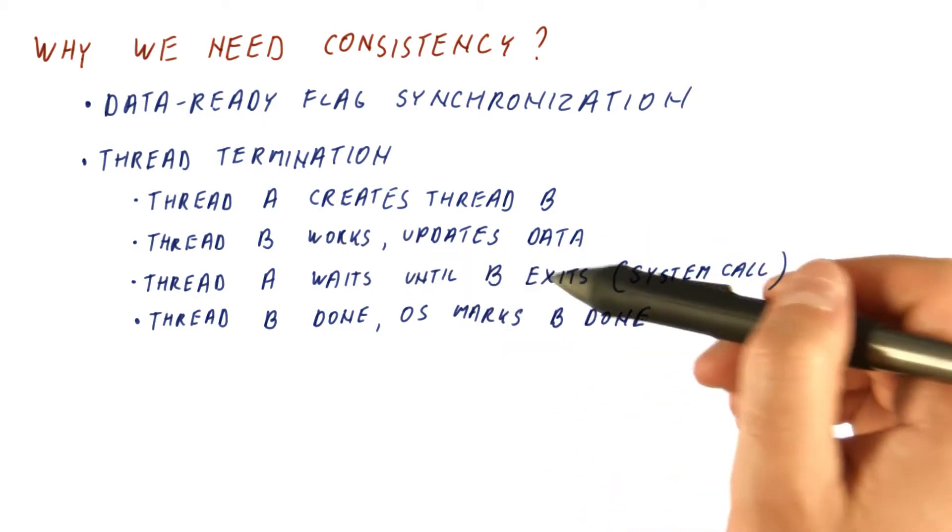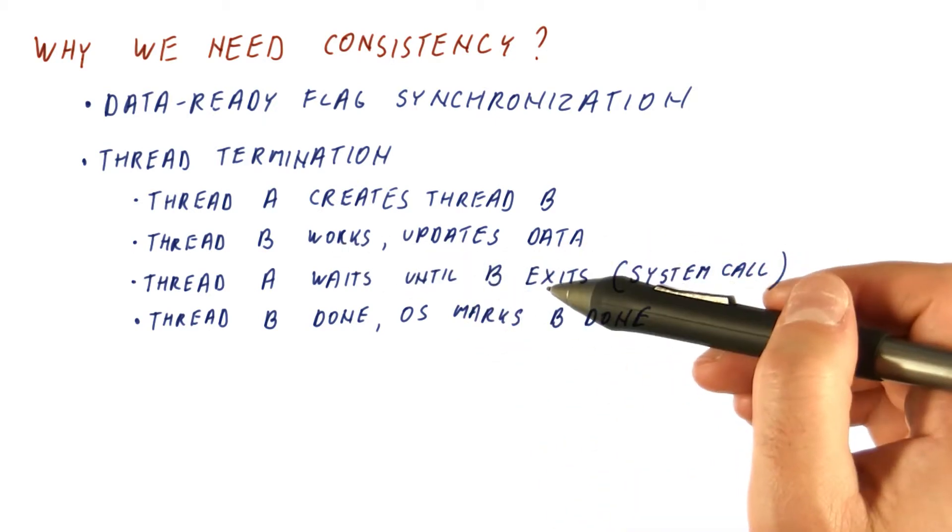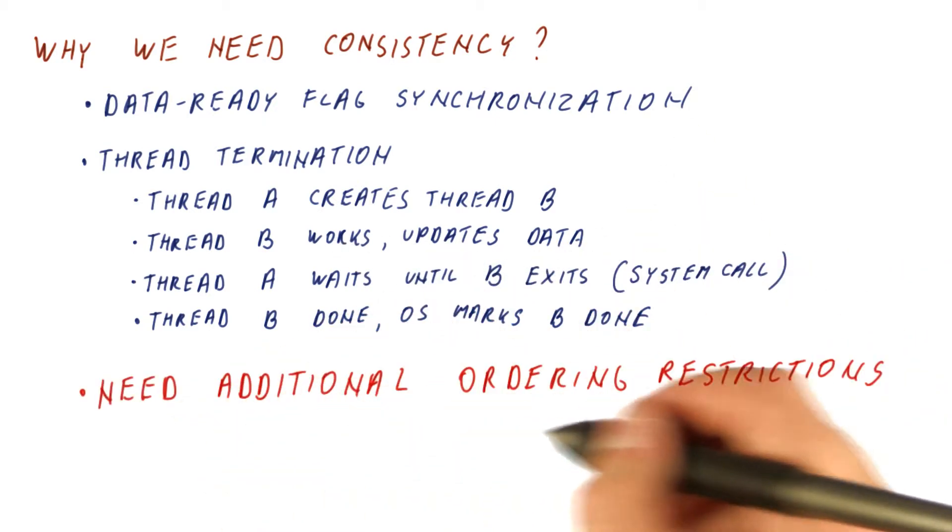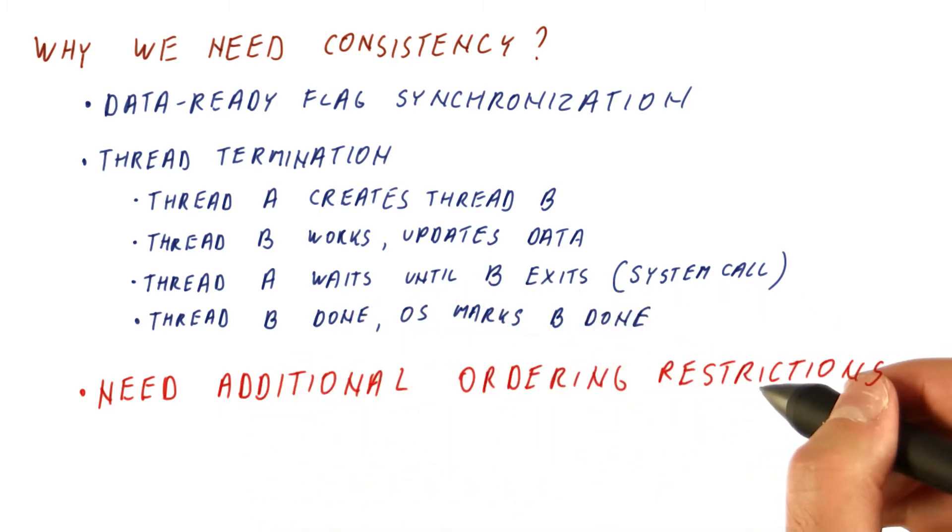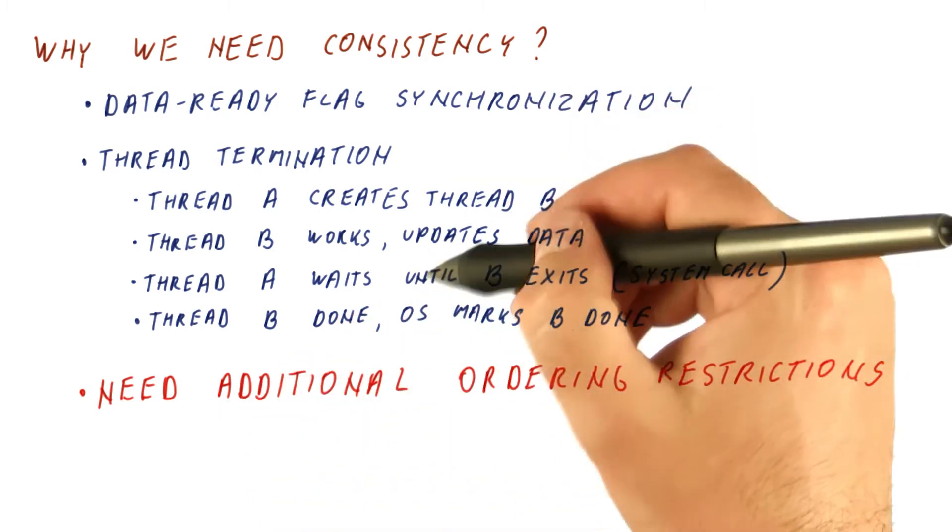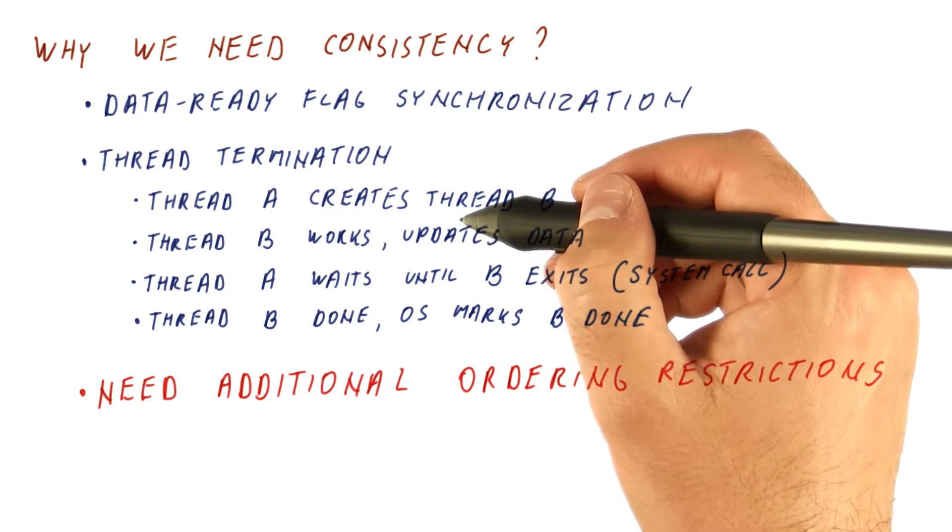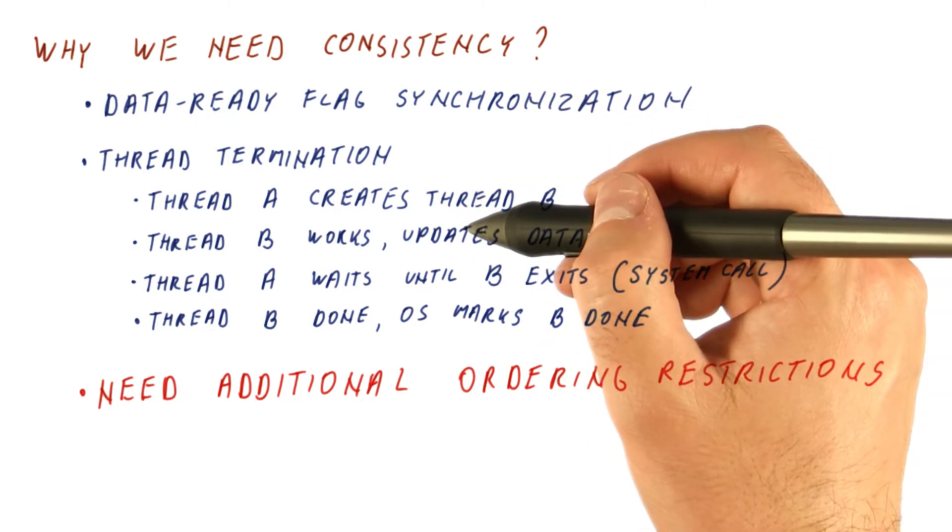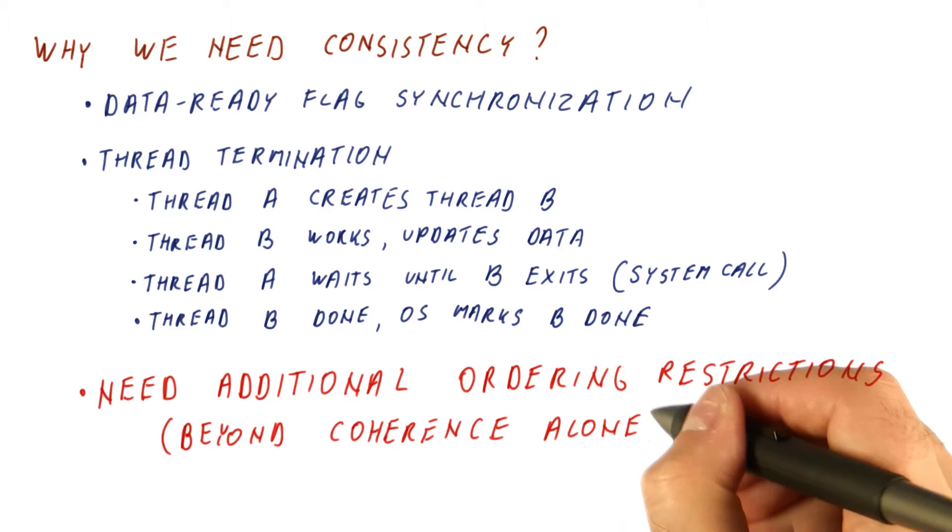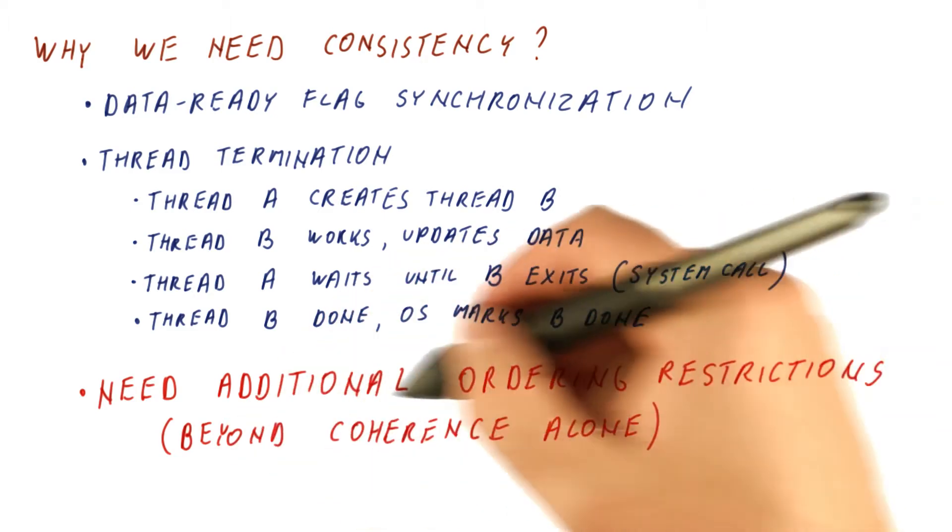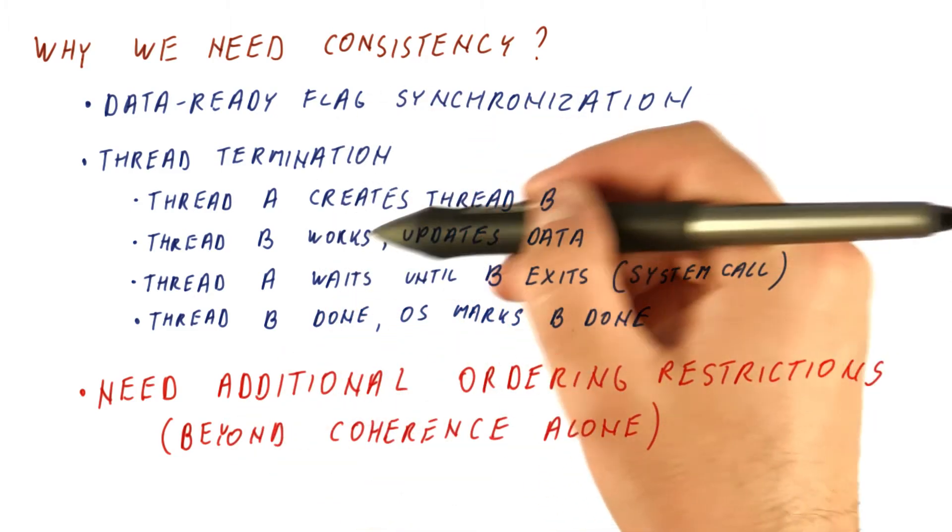while in fact thread B is not done when we branch predict this. So what we need is some sort of additional set of ordering restrictions that are going to prevent the weird situations that we can get into without any consideration for consistency. And again, this goes beyond coherence alone. We already saw that coherence doesn't really help us here.